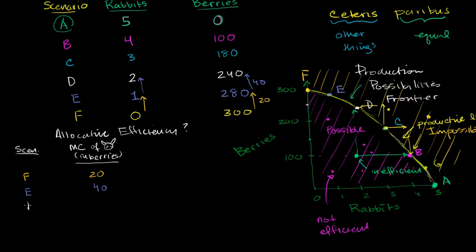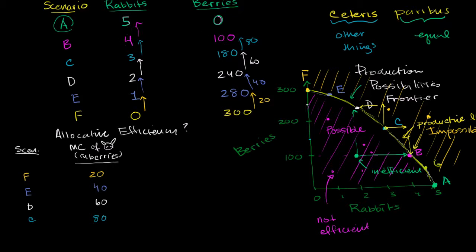Now scenario D — the cost of one extra rabbit is now 60 berries. In scenario C, the cost is now 80 berries. Finally, in scenario B, the cost of getting one extra rabbit is 100 berries. I won't go into scenario A because it would be impossible to have any more rabbits — you have no more berries to give up. So those are all the possible scenarios and their marginal costs.